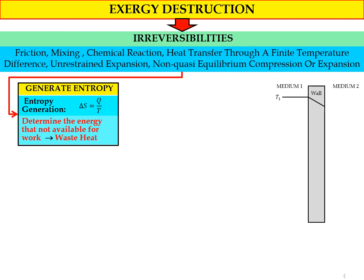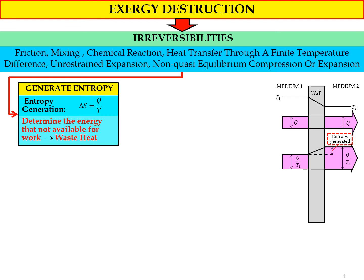Let's say we have a wall with medium one at temperature T1 and medium two at temperature T2. Heat transfers through the wall from medium one to medium two, and Q is equal throughout the system. In the case of entropy — from the equation Q divided by T1 compared to Q divided by T2 — the entropy in medium two is larger, meaning entropy is generated across the system.